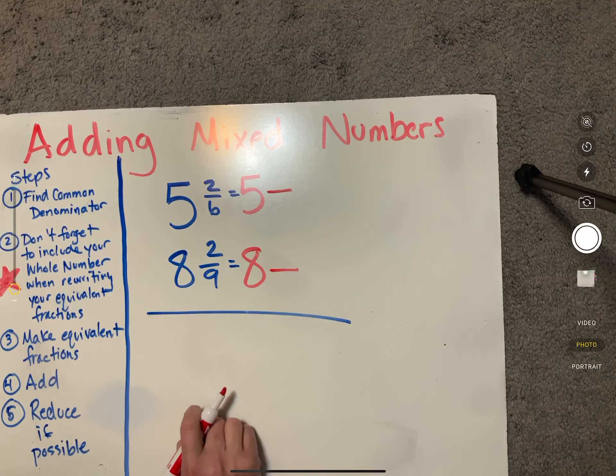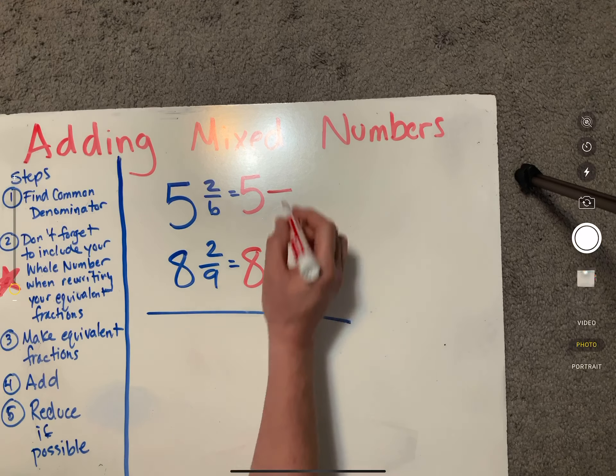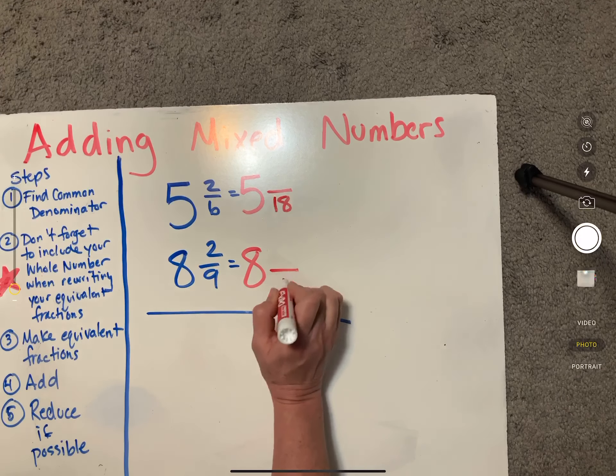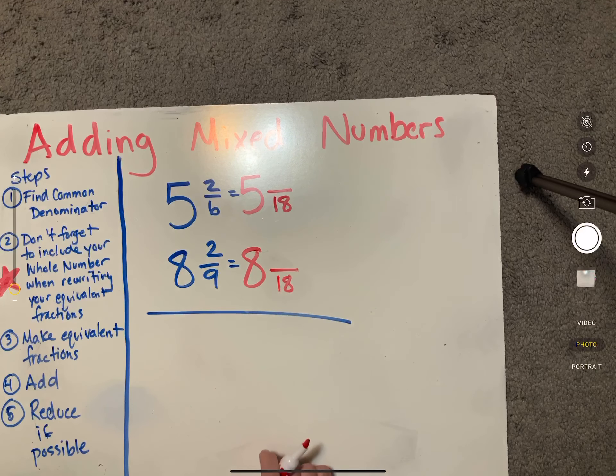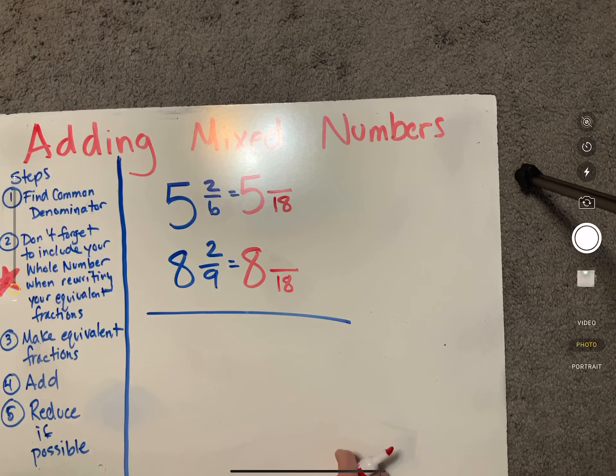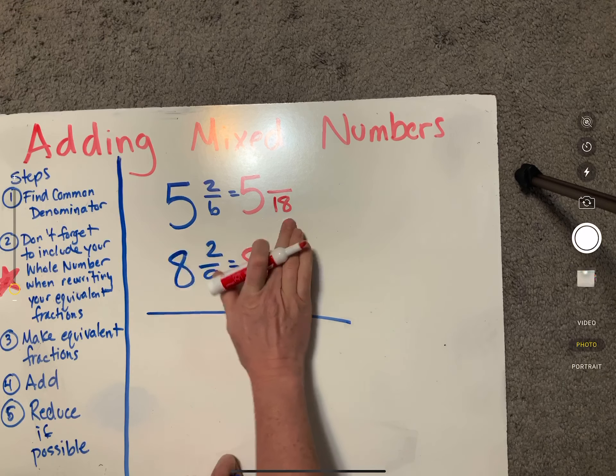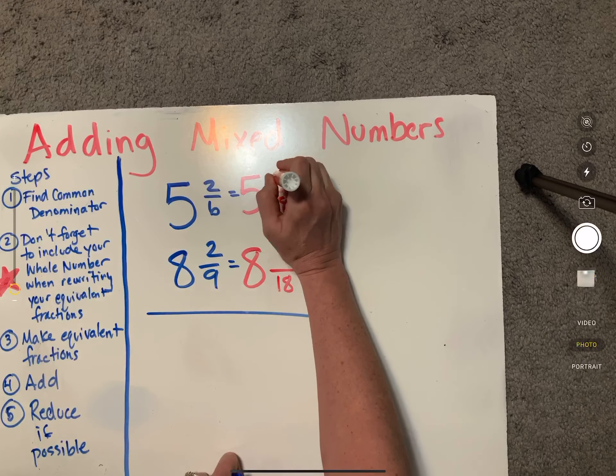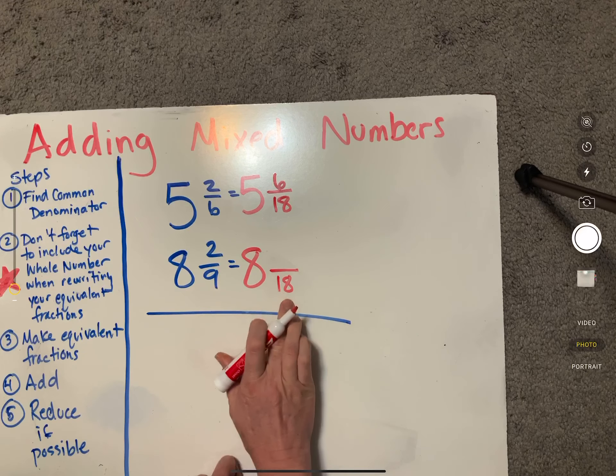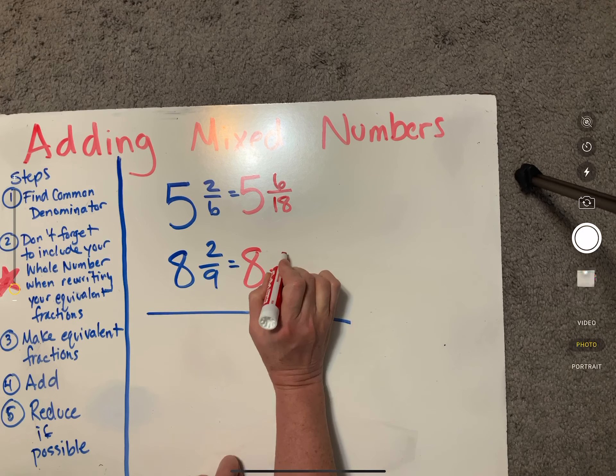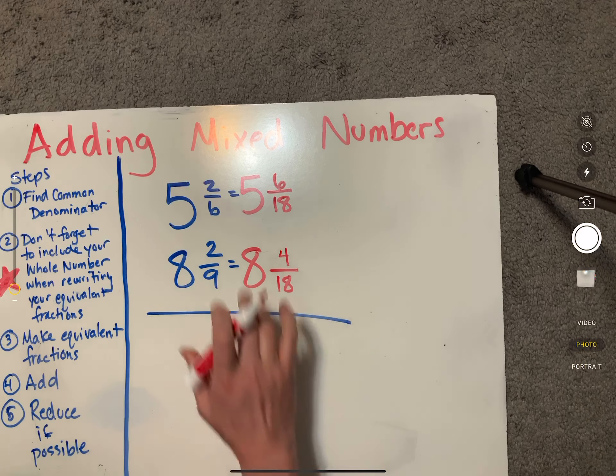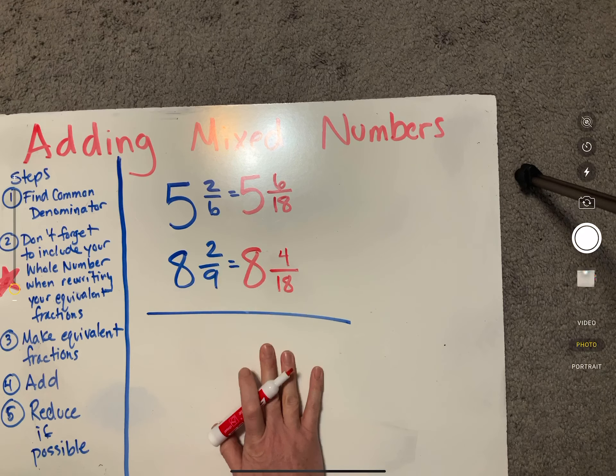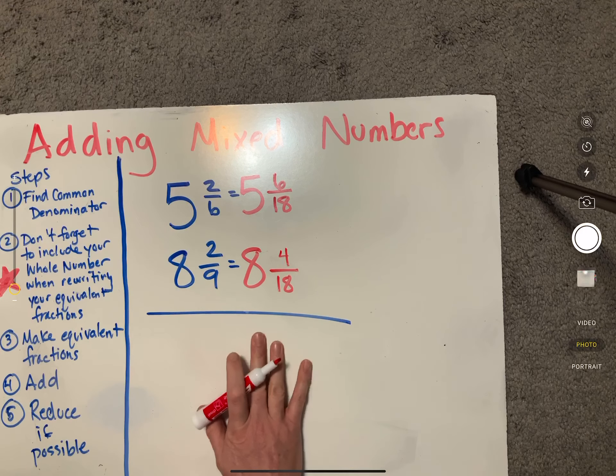Now we're ready to make our equivalent fractions. Six and nine, I would say we could do 54, but 18 is actually going to be the lowest. Six times three is 18, two times three is six. Nine times two is 18, two times two is four.